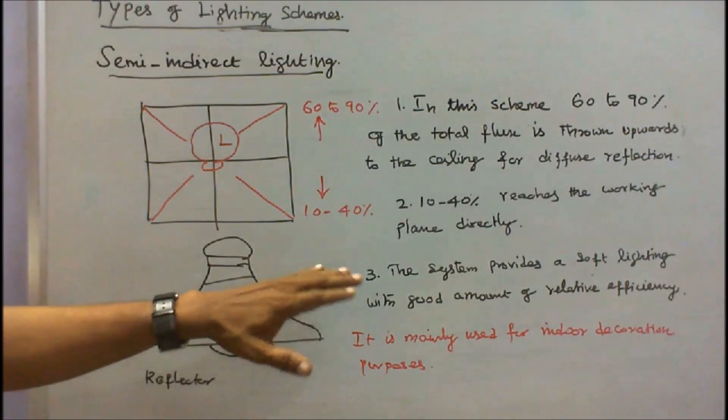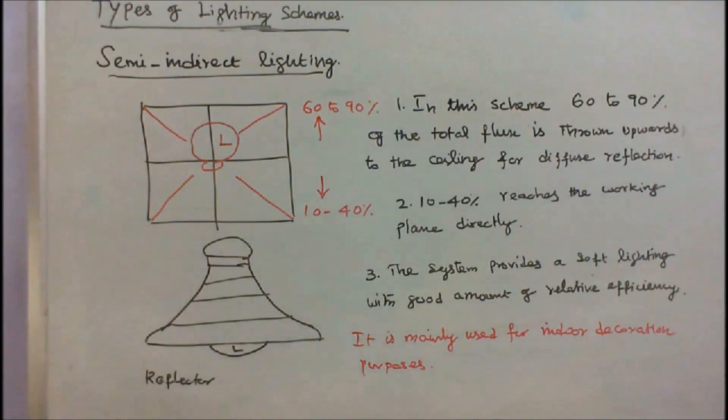The system provides soft lighting with a good amount of illumination efficiency. This is a reflector. It is mainly used for indoor decoration purposes.